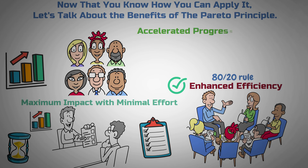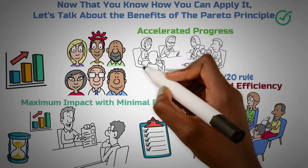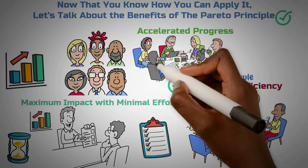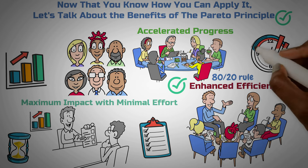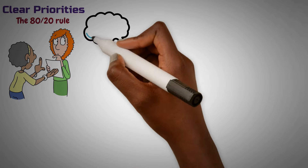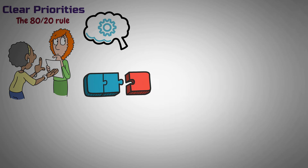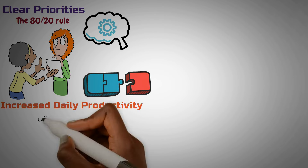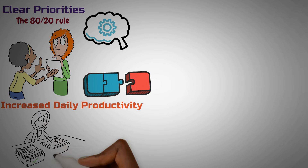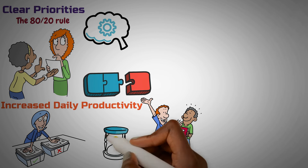Third, accelerated progress: the Pareto Principle can expedite progress toward metrics and objectives by directing attention to the most influential factors — prioritizing initiatives in the right order can produce significant improvements in key performance indicators in a shorter period. Fourth, clear priorities: the 80-20 rule provides clear guidance on where to focus efforts for both individuals and teams, streamlining decision-making and ensuring resources align with overarching goals. Fifth, increased daily productivity: by identifying and prioritizing high-impact tasks, individuals can accomplish more in less time, leading to greater overall efficiency.